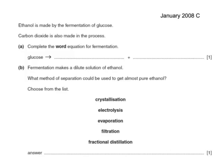Here's a past paper question. Ethanol is made by the fermentation of glucose. Carbon dioxide is also made in the process. Complete the word equation for fermentation. Well, this is straightforward. It's given you the information that you need. The two products are ethanol and carbon dioxide.